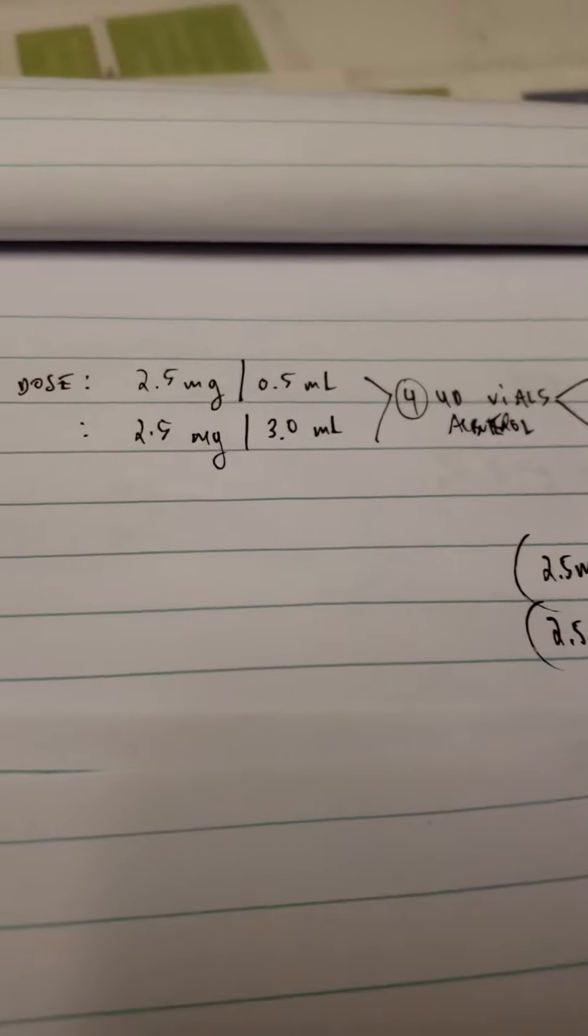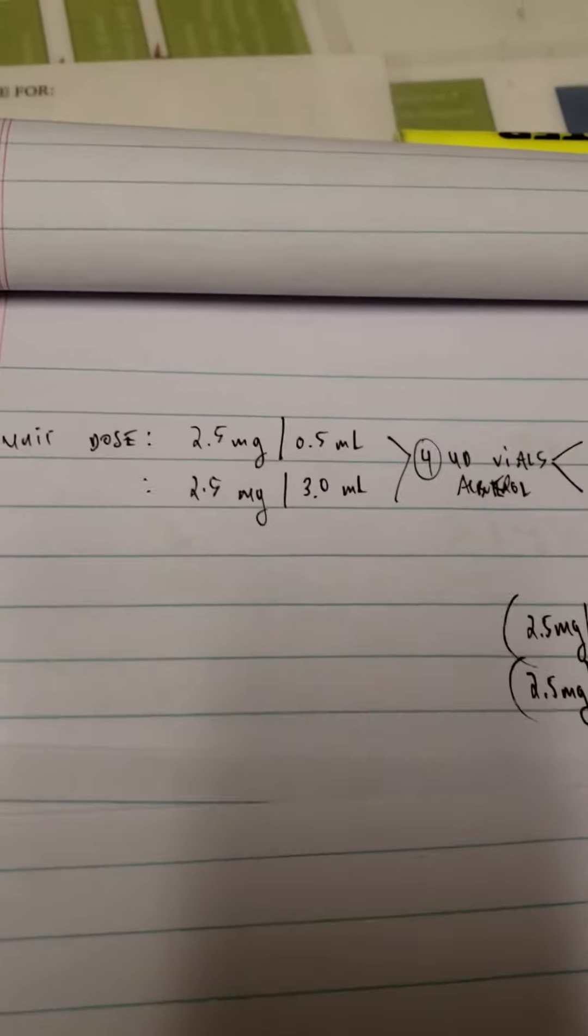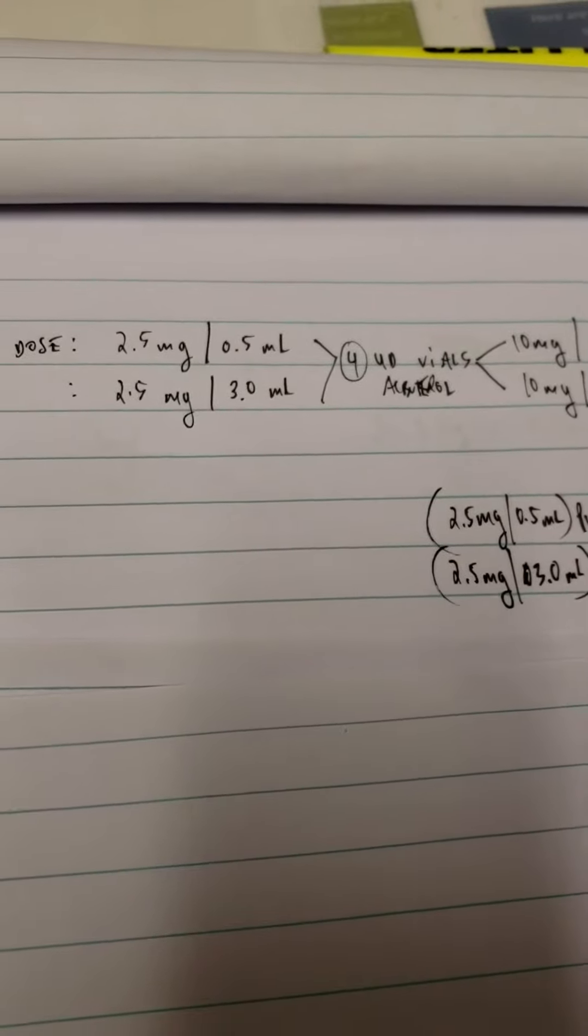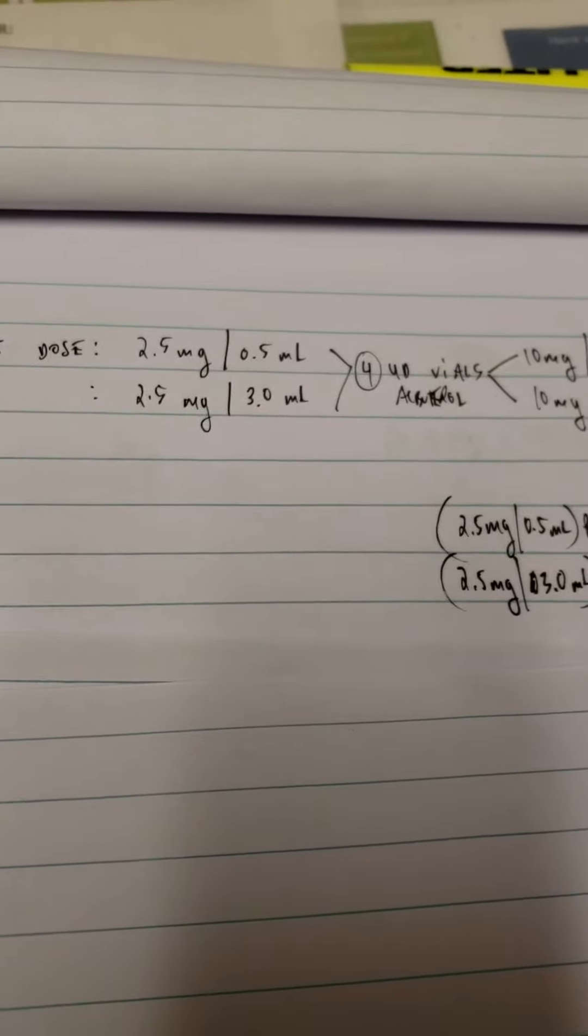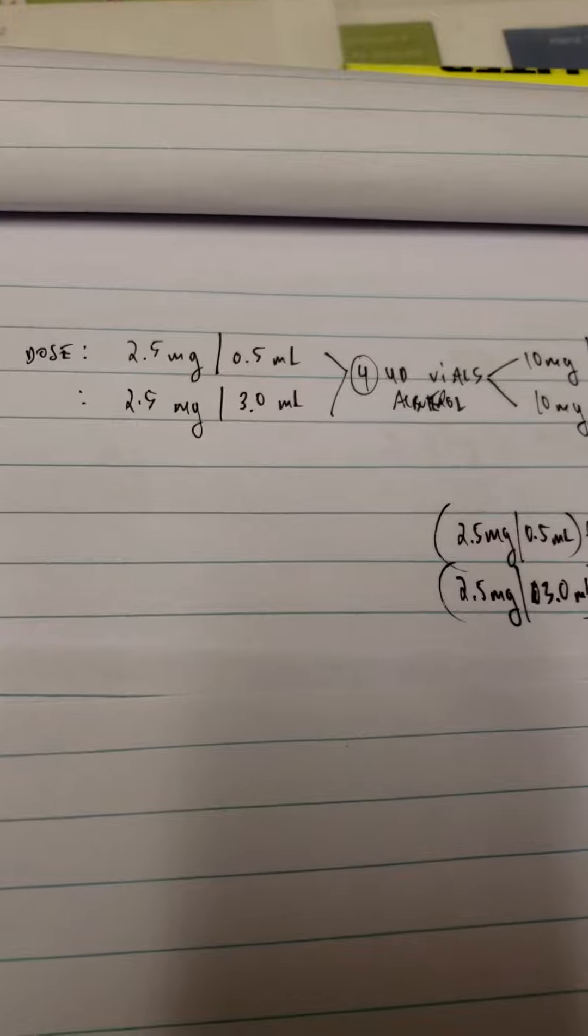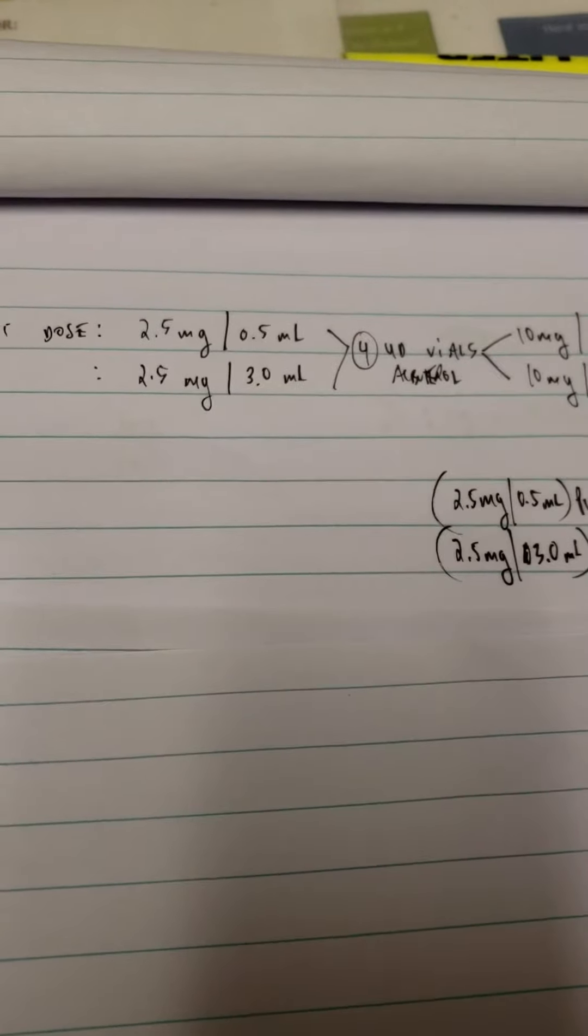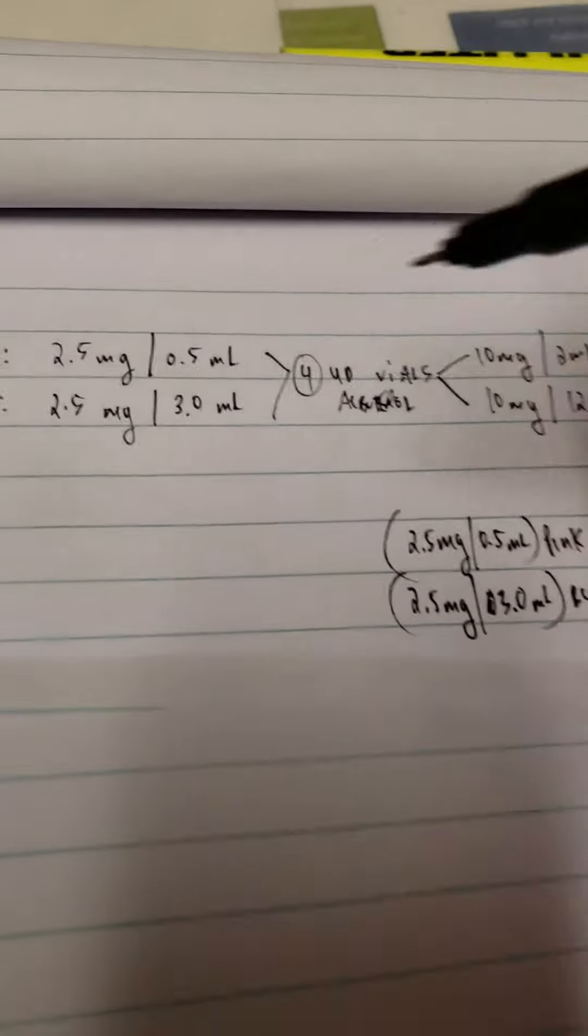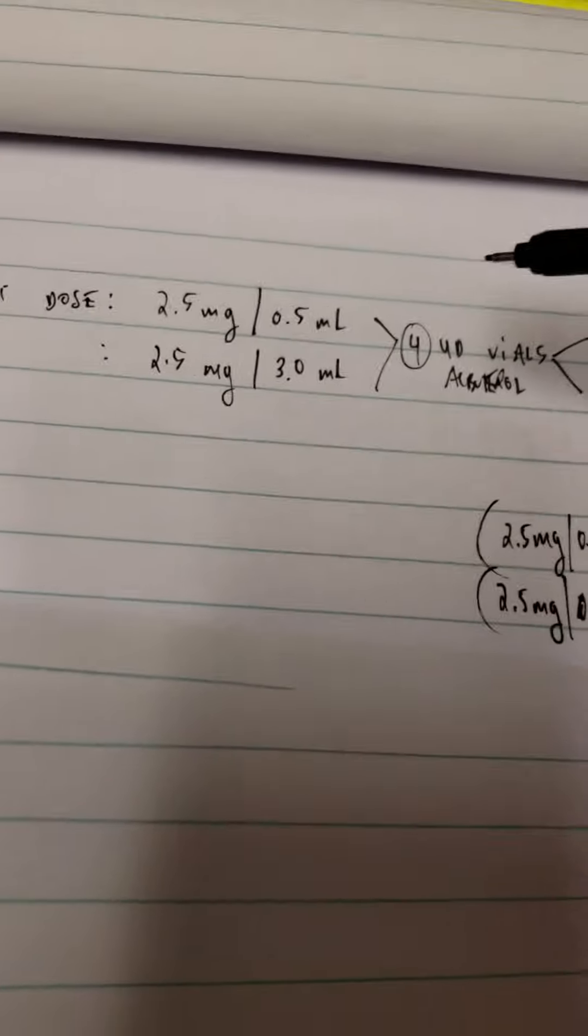Okay folks, we're back for another one. Question four: if you added four unit dose vials of 2.5 milligram albuterol solution to your nebulizer, how much is the total dosage of the treatment? Well, unit dose, even if you are...